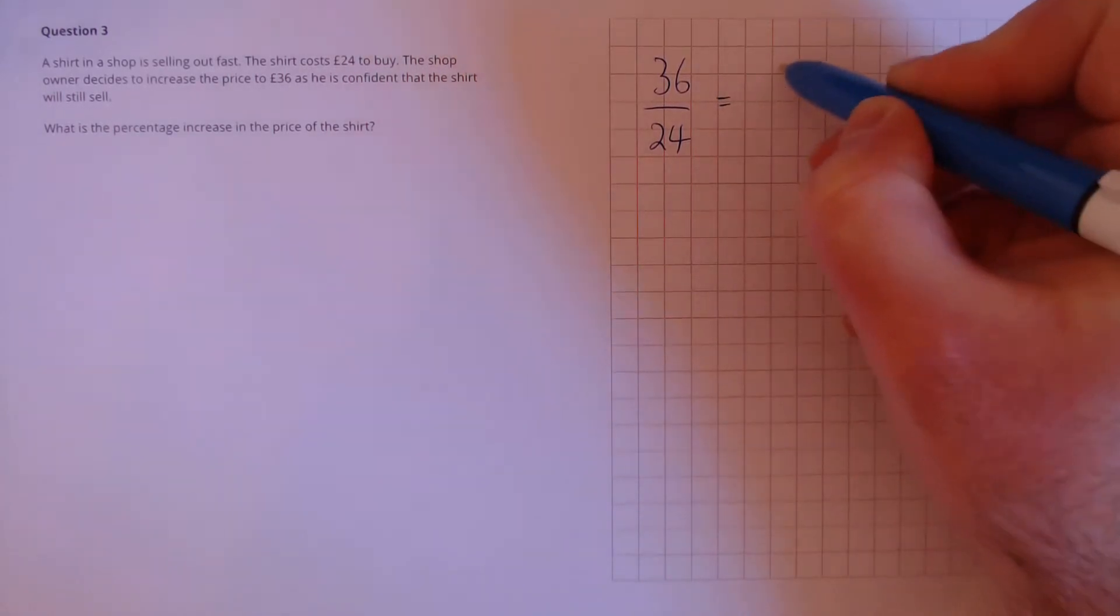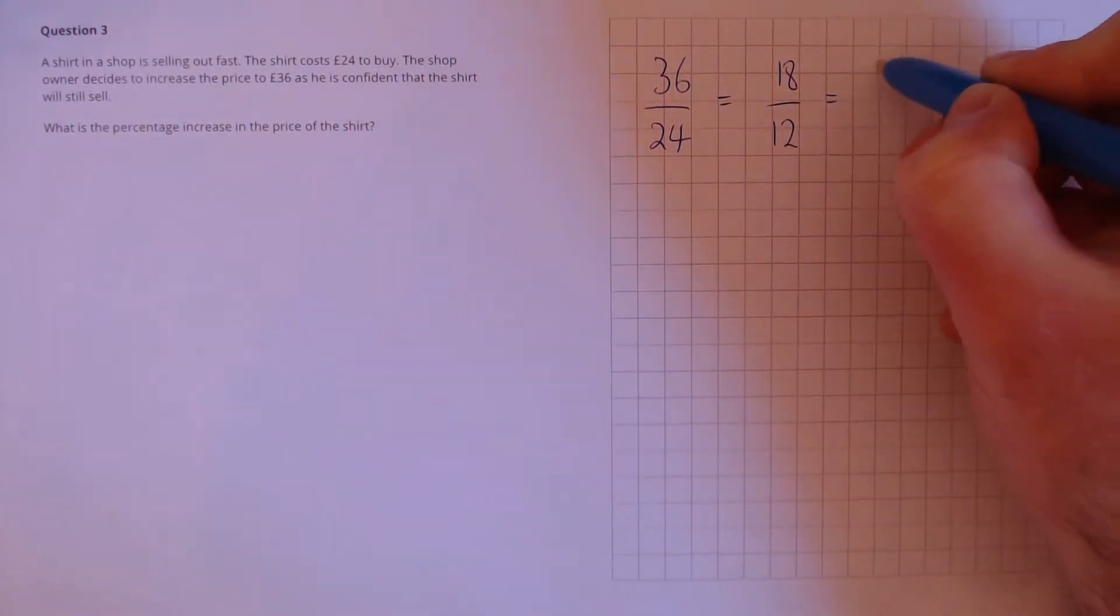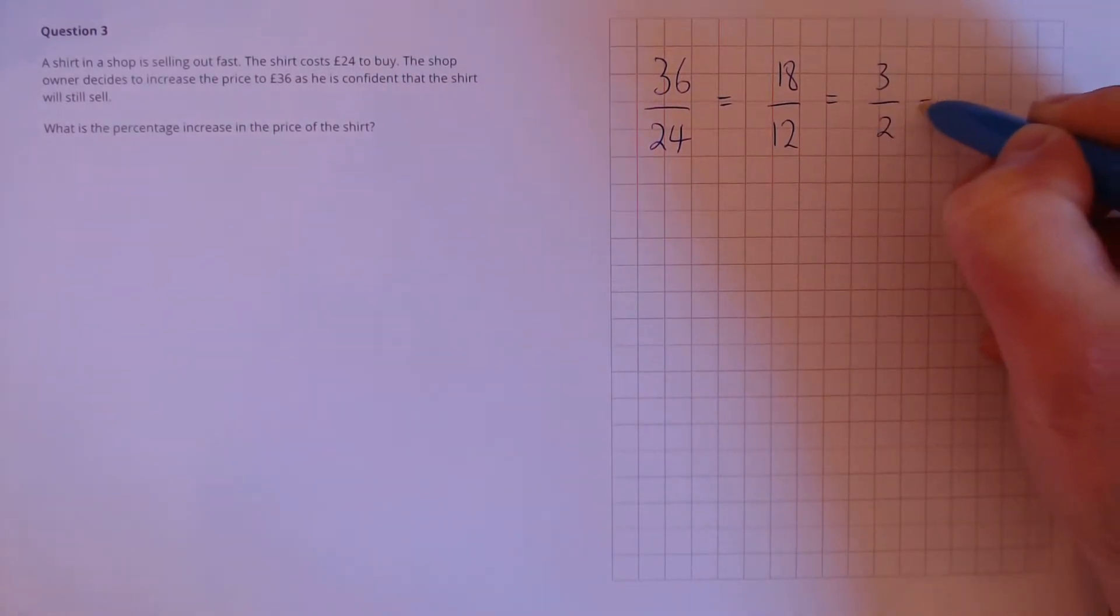Let's cancel that down. So we get 18 over 12, which again simplifies down to 3 over 2 which is equivalent to 1.5. That's the multiplier.